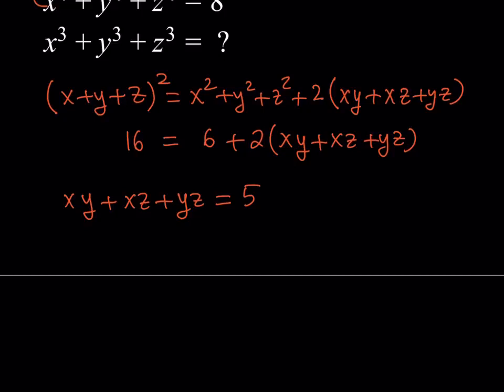So that would be xy plus xz plus yz equals 5. I'd like to keep this because I'm going to use it later on. So this also goes along well with the Vieta's formulas. This is basically the two-way products of the roots.